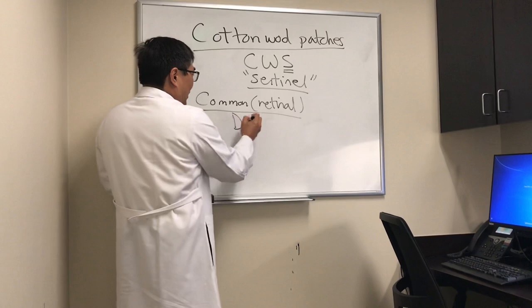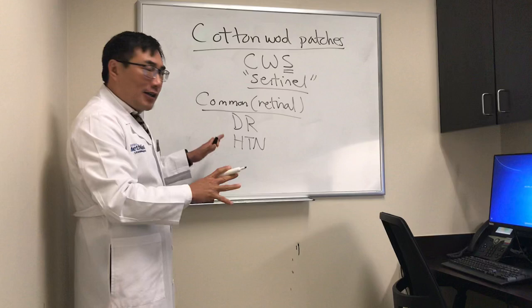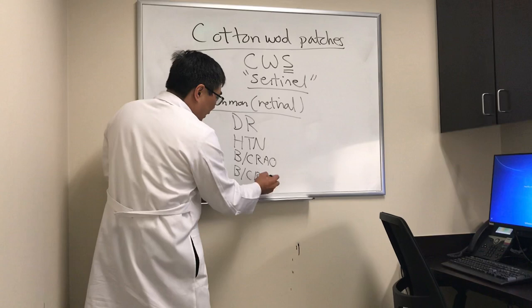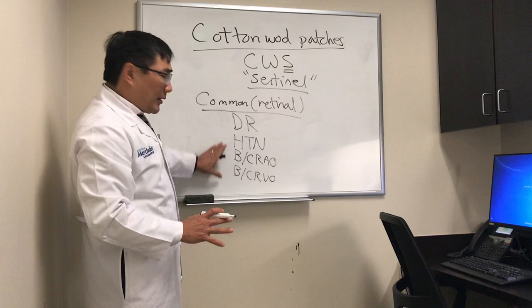Of course diabetic retinopathy and hypertensive retinopathy are the super common causes of cotton wool patches. Then there's vascular occlusive disease — either branch or central retinal artery occlusion, or branch or central retinal vein occlusion. When we're looking at cotton wool patches as a sentinel of systemic vascular disease, the shape, morphology, and pattern of the spots are important.